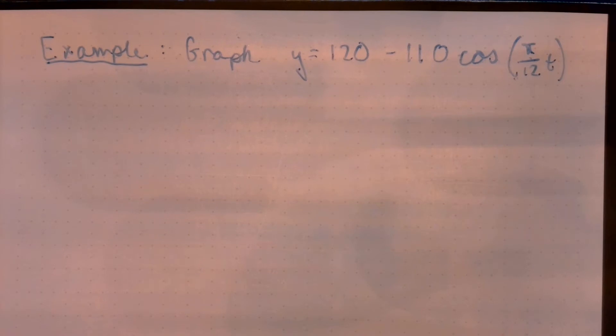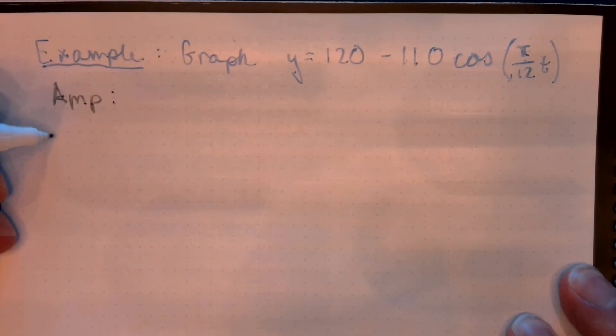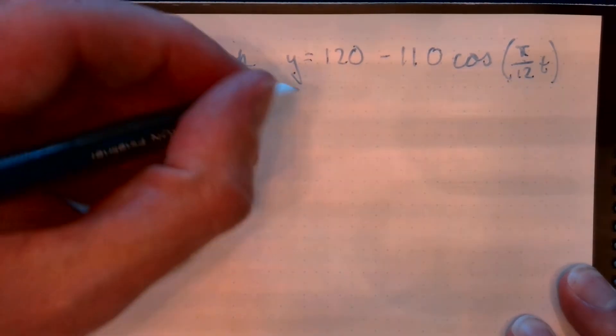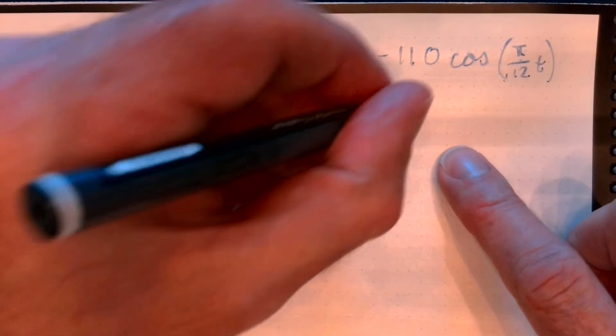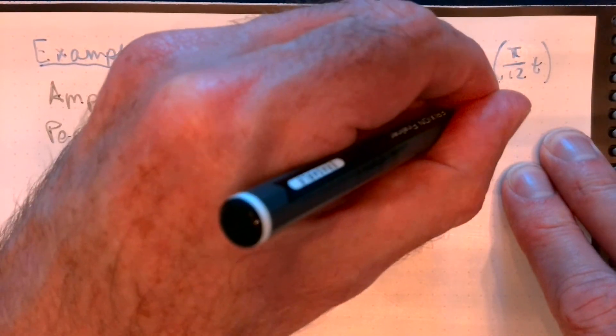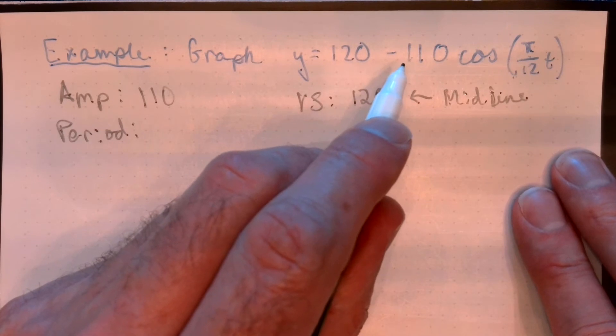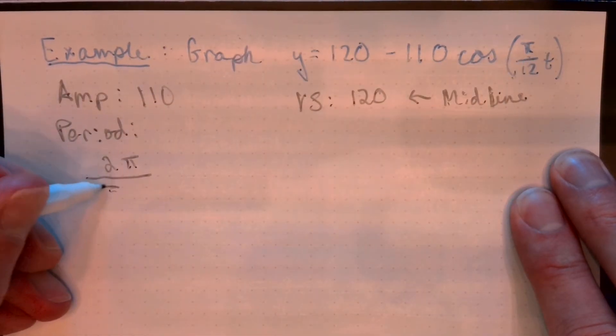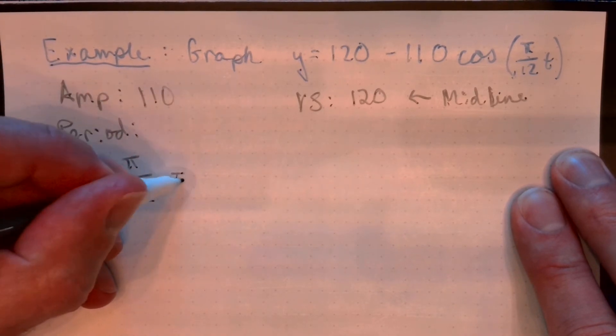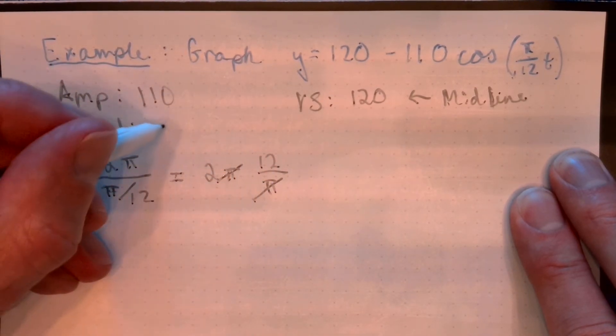Let's do a couple more examples here. The vertical shift is 120, so that's the midline once again. Amplitude, 110. Remember from our previous videos, the amplitude of a trig function will never be negative. To get the period, we do 2 pi over this multiplier. 2 pi over pi over 12. How do you divide by a fraction? We remember that you multiply by the reciprocal. So strike, strike. So the period is 24.